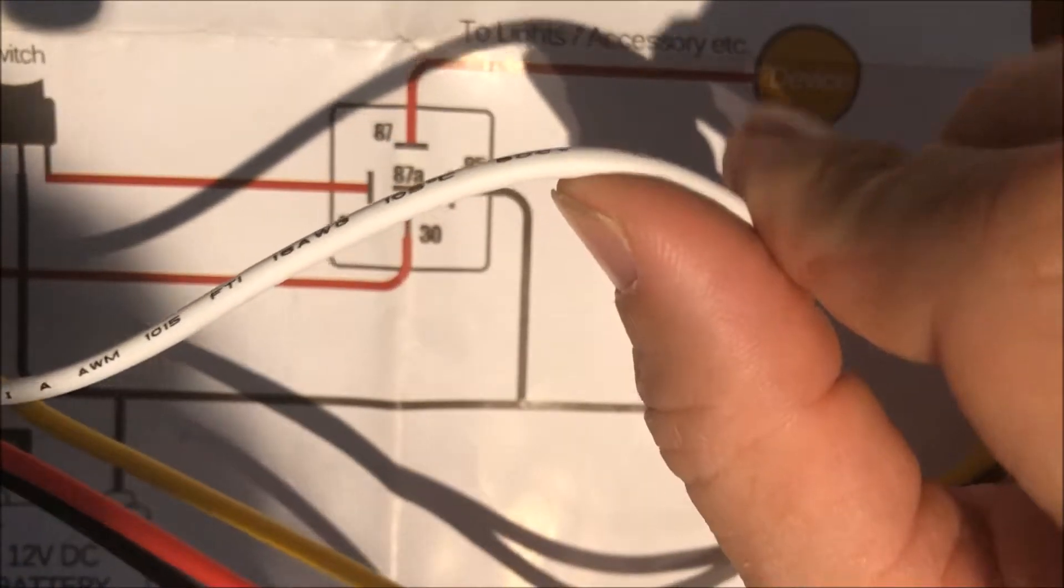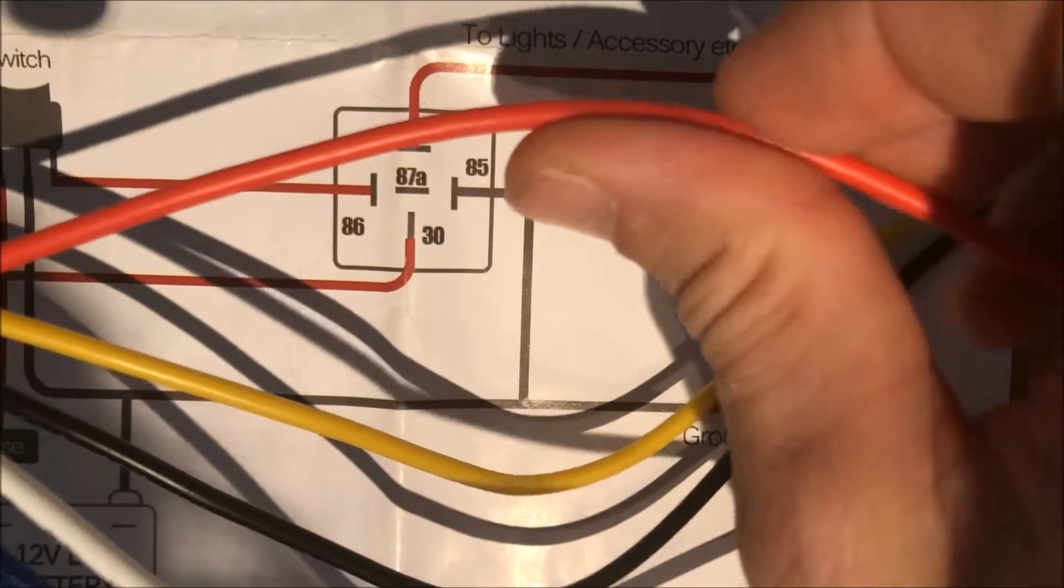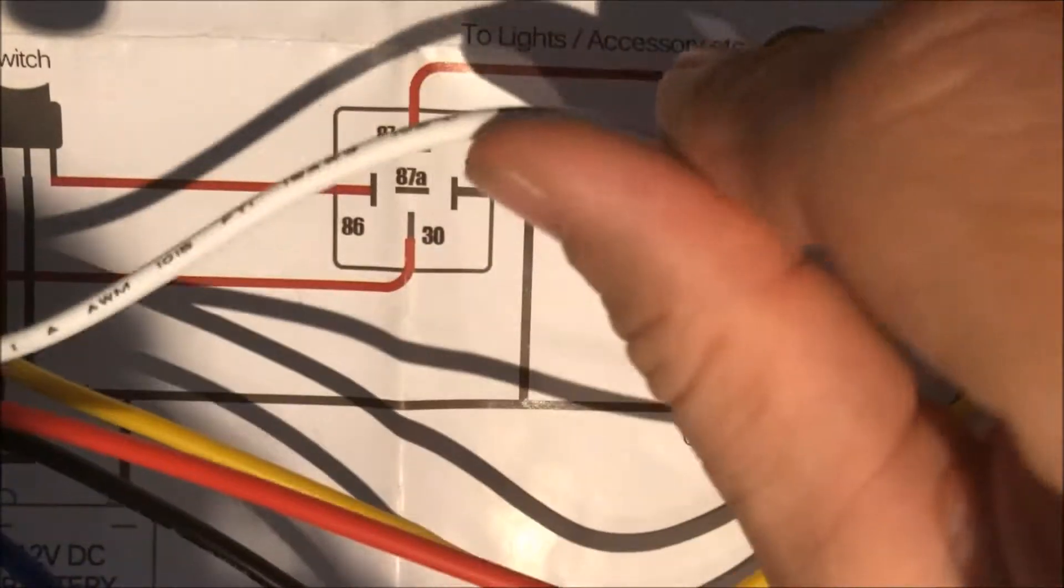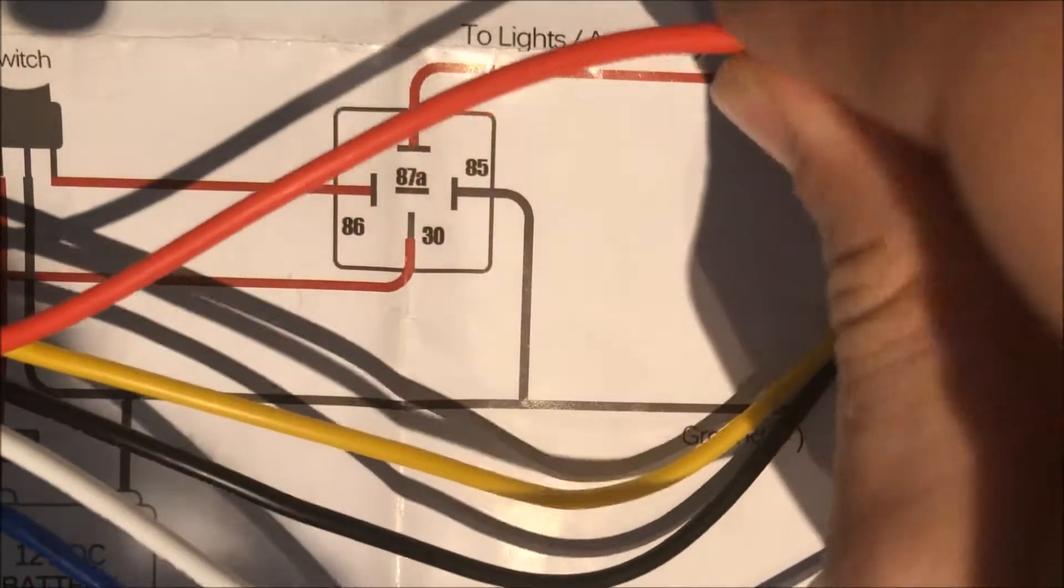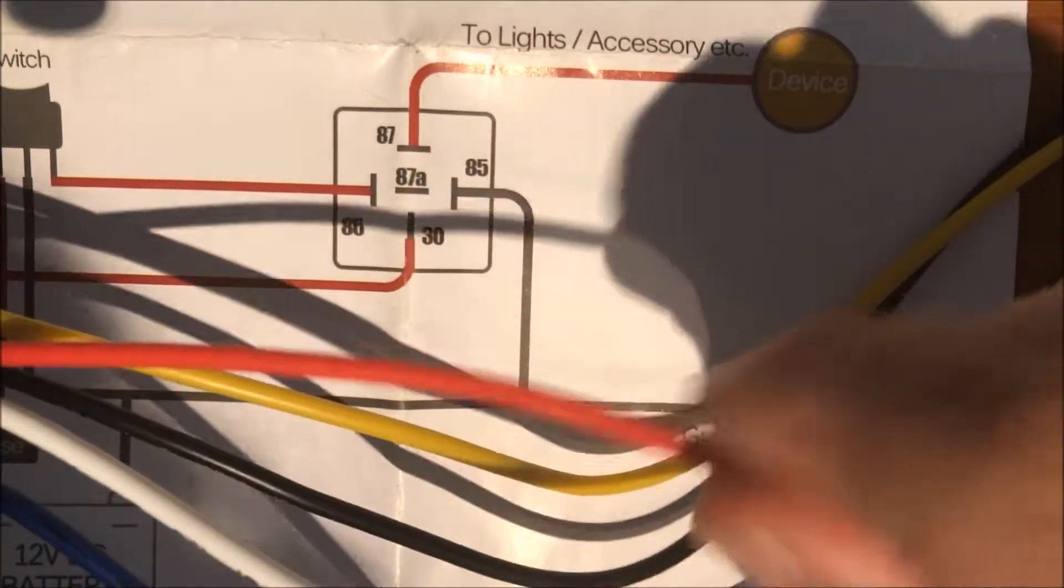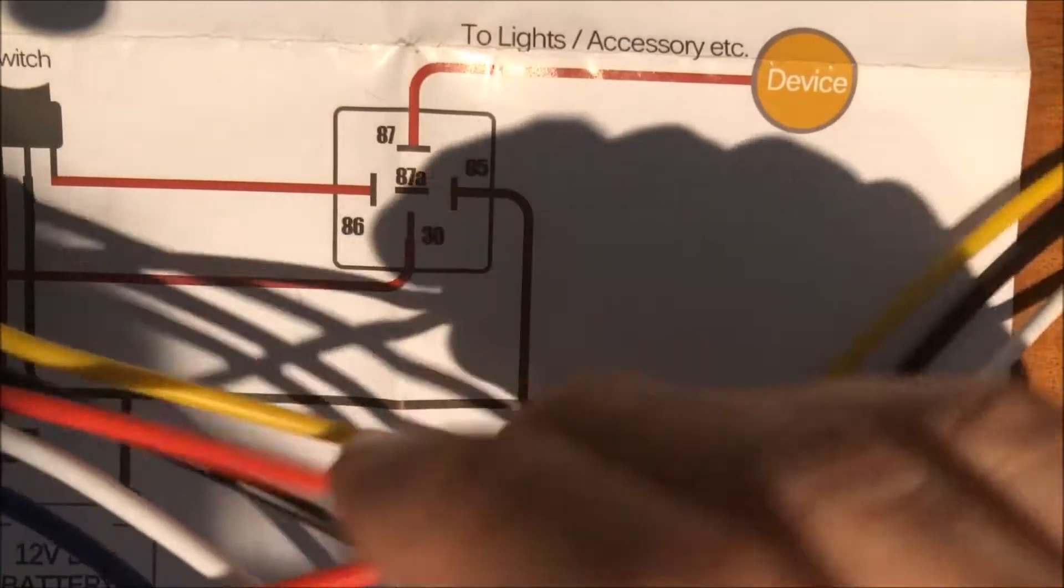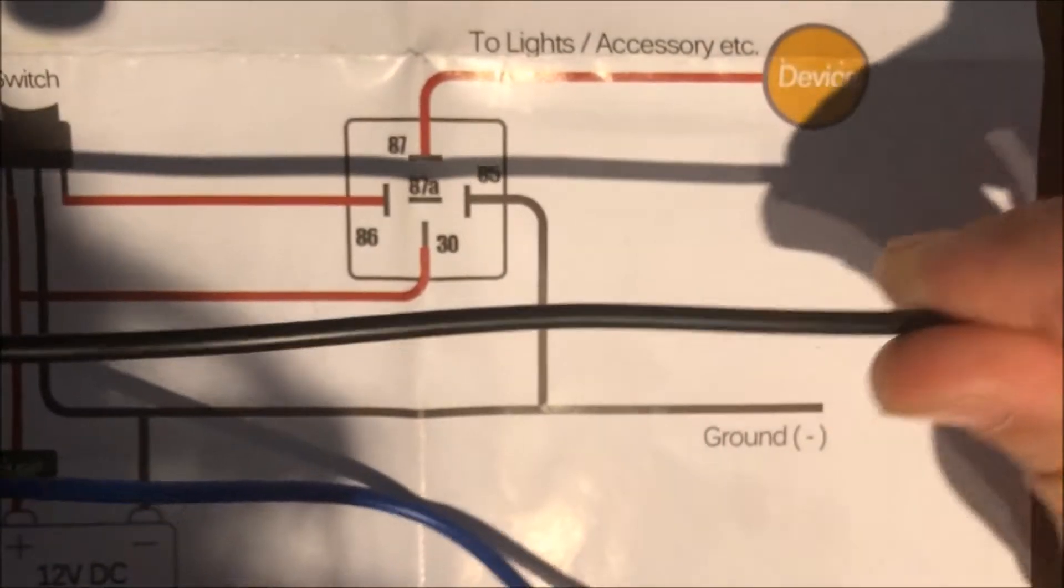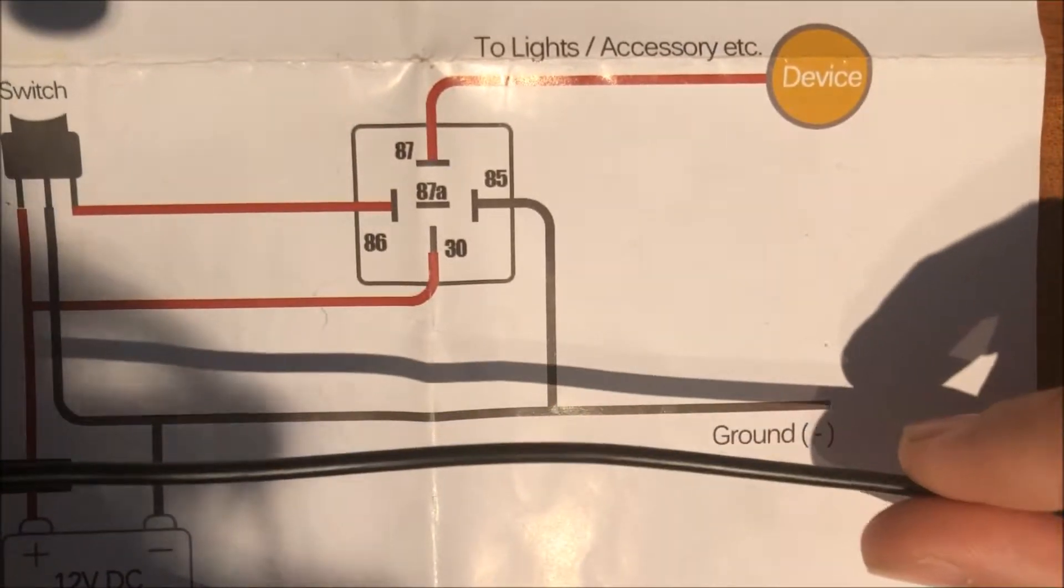This red wire is a reverse switch - we're not going to use that, but the idea is that when the control switch is off, the reverse switch is on. When the control switch is on, then this reverse line is off. But we're not going to use that right now. Finally, as you may have guessed, the black wire just goes to ground.